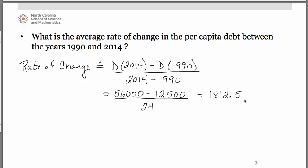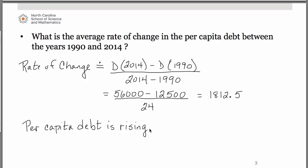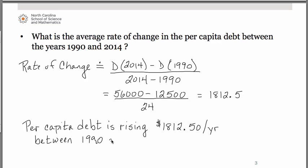Now let's talk about what this tells us, because interpreting these rates of change is a really important key component. What this tells us is that the per capita debt is increasing — we know that because 1,812.5 came out positive. Specifically, the per capita debt was rising approximately $1,812.50 per year over the years from 1990 to 2014.